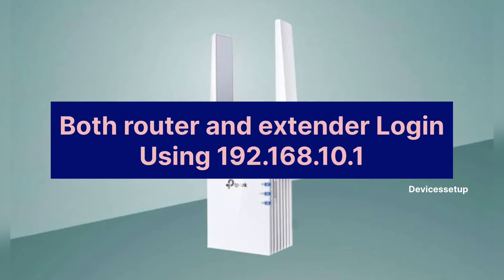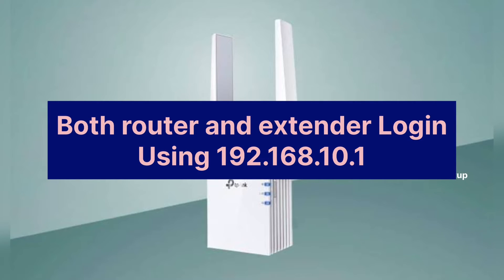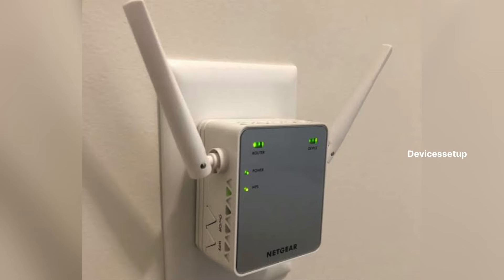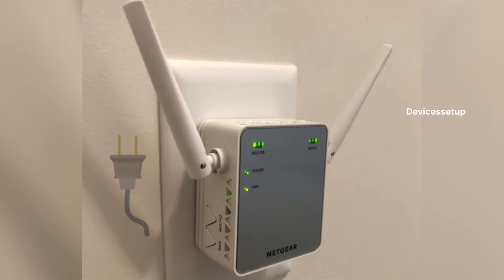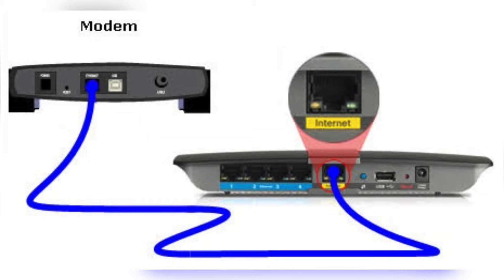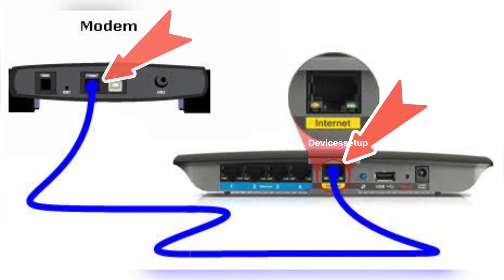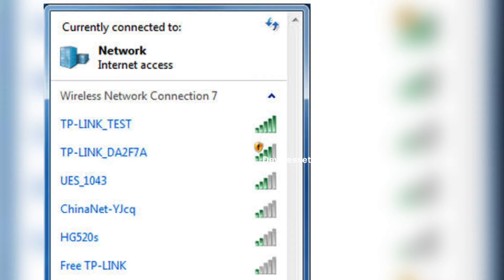In this video I'll explain both router and Wi-Fi extender login using this IP address. To start, make sure your device is plugged into a power source with a stable power LED. For your router setup, connect an ethernet cable from your modem to the WAN port or internet port of the router, if not already set up.